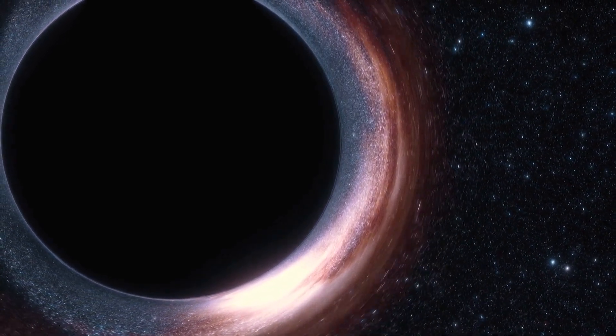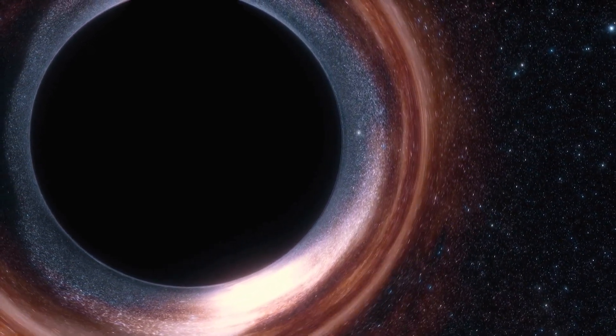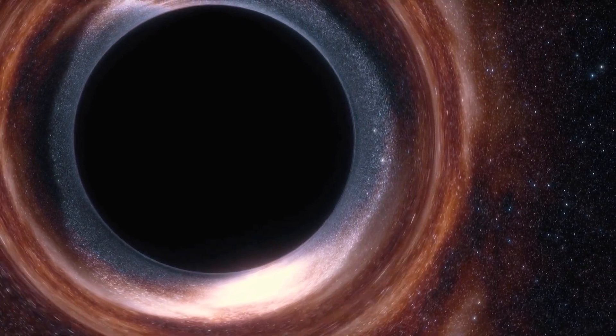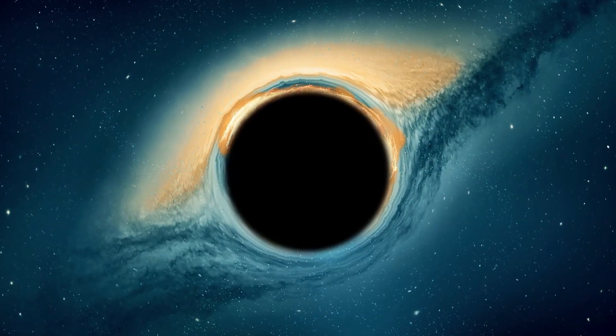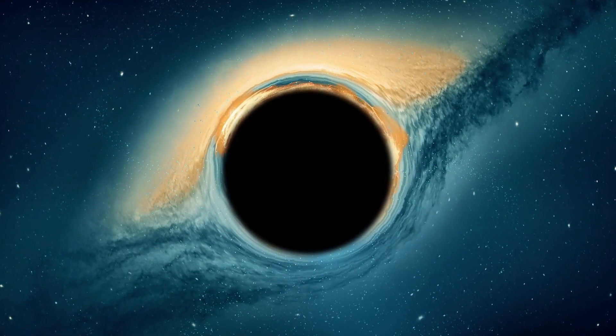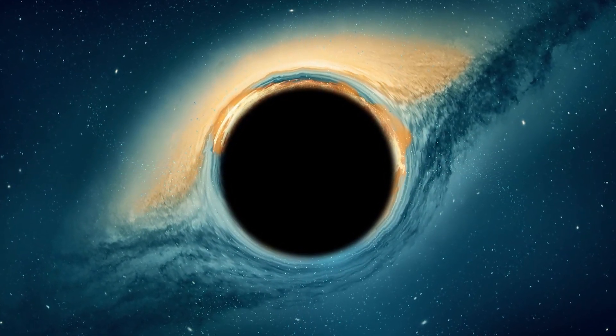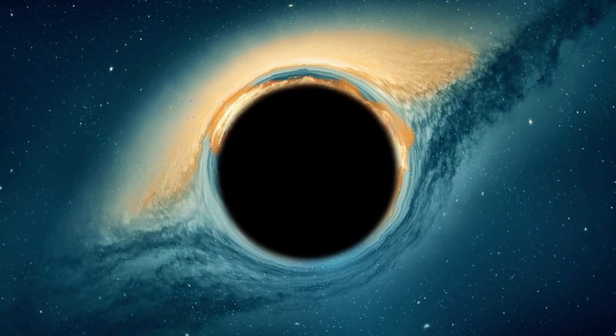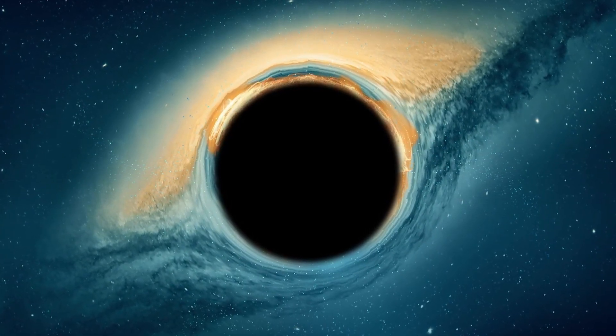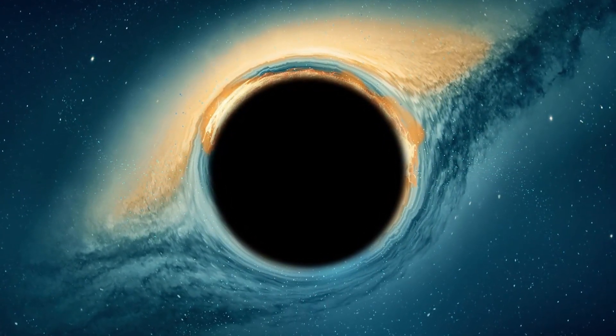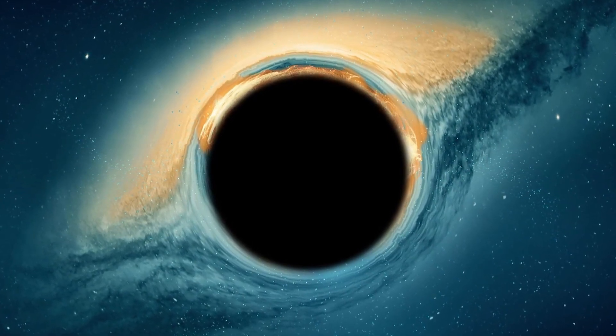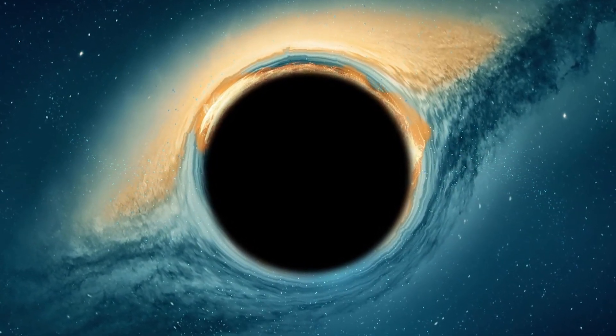As we well know, black holes possess extremely powerful gravitational force that even light cannot escape. However, in the vicinity of a black hole, one often finds a spinning disk of material, such as gas or dust, concentrated by its immense gravity. This material heats up as it spirals towards the black hole, emitting X-rays and other types of radiation, creating a luminous ring known as a corona.